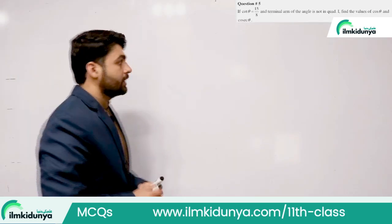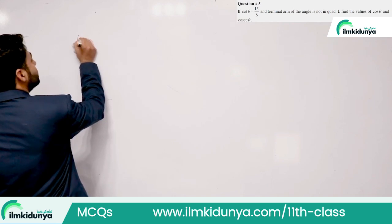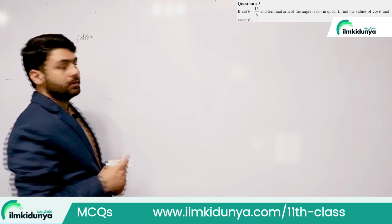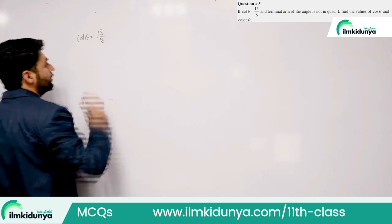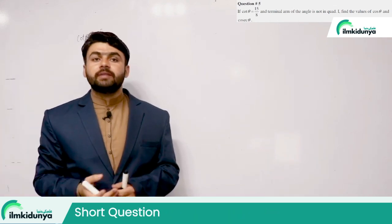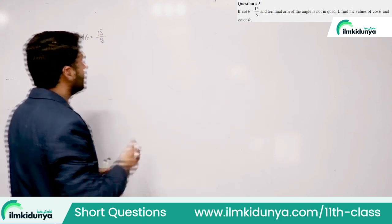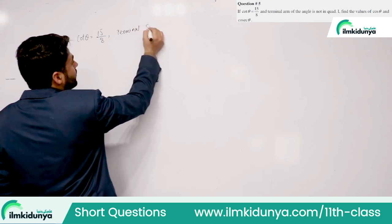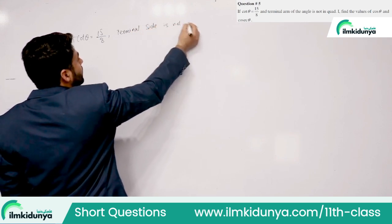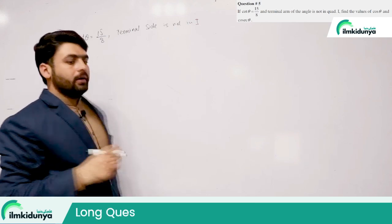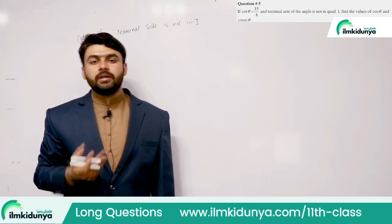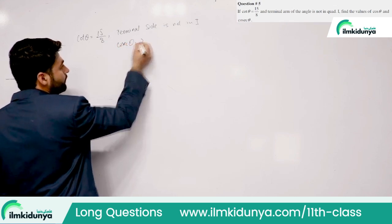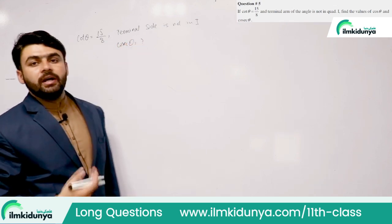Question number 5: cot θ = 15/8. The terminal side is not in the first quadrant. We need to find the cosecant theta and the remaining trigonometric functions.